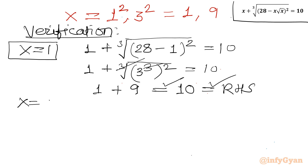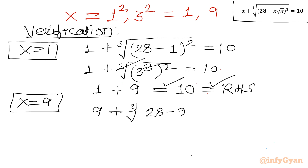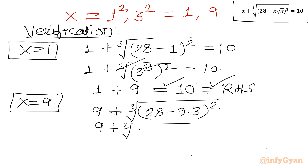For x = 9: 9 plus cube root of (28 minus 9·√9)² = 9 + ∛(28 − 27)² = 9 + ∛(1²) = 9 + cube root of 1 = 9 + 1 = 10. Verified — this equals our RHS.